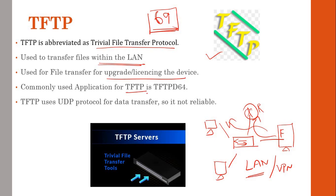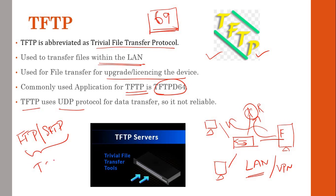Common TFTP applications include third-party tools such as TFTP64. TFTP uses UDP protocol, whereas FTP and SFTP both use TCP. Because TFTP uses UDP, it is less reliable — packets are sent without waiting for acknowledgement. This is why TFTP is predominantly used only within the local LAN, where reliability is less of a concern.